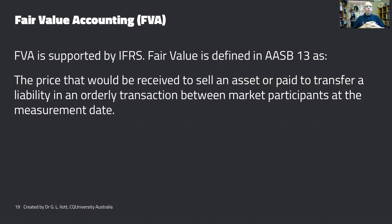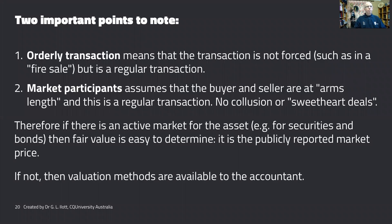IFRS, represented here by AASB 13, defines fair value as the price that would be received to sell an asset, or what you would pay to transfer a liability, in an orderly transaction between market participants at the measurement date. An orderly transaction means it's a normal, regular transaction and not a forced or rushed sale. Market participants assume the buyer and seller are at arm's length — no collusion, no sweetheart deals, no mates rates.